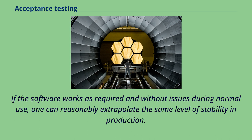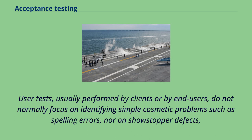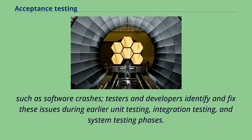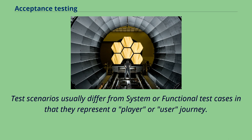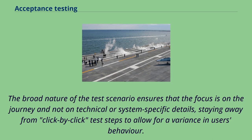User tests, usually performed by clients or by end-users, do not normally focus on identifying simple cosmetic problems such as spelling errors, nor on showstopper defects such as software crashes. Testers and developers identify and fix these issues during earlier unit testing, integration testing, and system testing phases. UAT should be executed against test scenarios. Test scenarios usually differ from system or functional test cases in that they represent a player or user journey. The broad nature of the test scenario ensures that the focus is on the journey and not on technical or system-specific details, staying away from click-by-click test steps to allow for a variance in users' behavior.